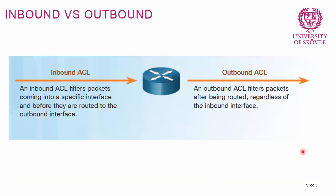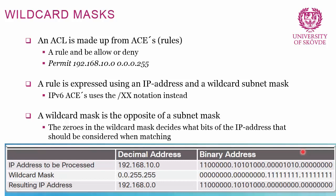Before moving on, there is a concept called wildcard masks you need to know about. An ACL is made up of access control entries (ACEs), and each rule includes either permit or deny, plus an IP address and a wildcard mask. The wildcard mask dictates which devices are matched by the rule. A rule is expressed using an IP address and a wildcard subnet mask — the wildcard mask is the opposite of the subnet mask. For example, for 192.168.10.0, the subnet mask is 255.255.255.0, so the wildcard mask would be 0.0.0.255.